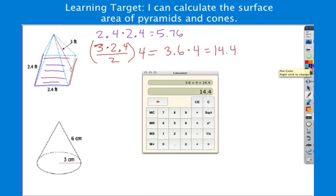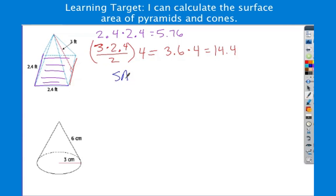So to put it all together then, the surface area for this pyramid is 5.76 plus 14.4, which equals, well, let's call it 20.16 or 20.2 feet squared.